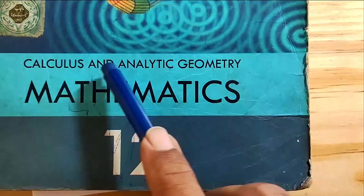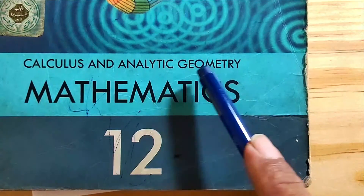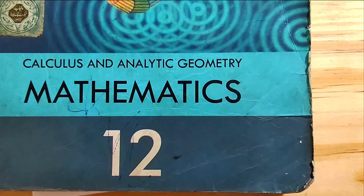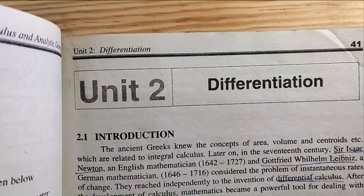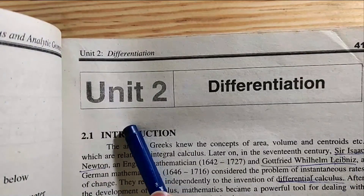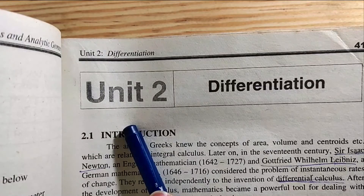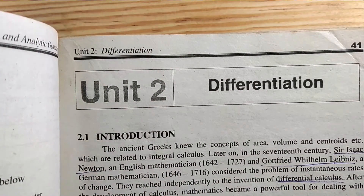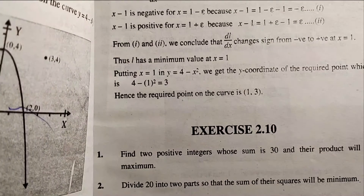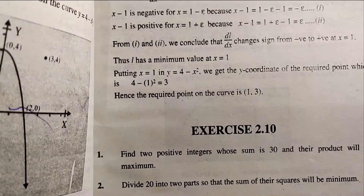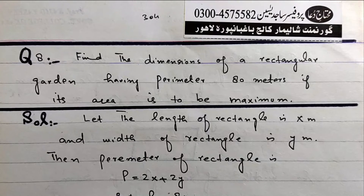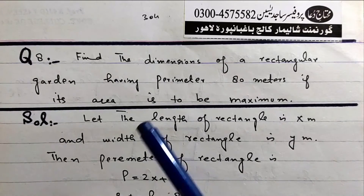Bismillahirrahmanirrahim. Calculus and Analytic Geometry, Mathematics for Second Year. Unit 2, Chapter 2: Differentiation. Exercise 2.10, Question No. 8.